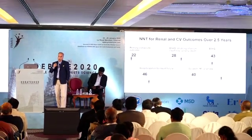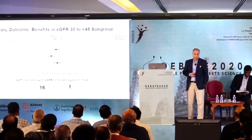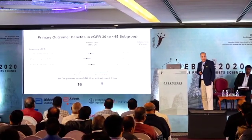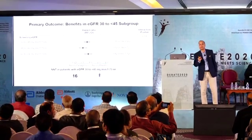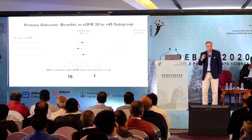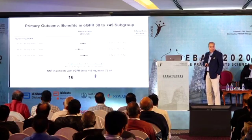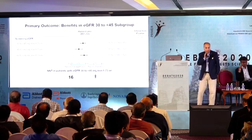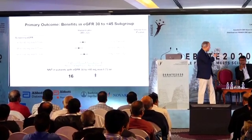The maximum benefit in the forest plot subgroup analysis was seen in individuals with eGFR between 45 and 60 — a high-risk group where aggressive treatment is most needed to prevent progression to lower GFR. In patients with eGFR between 30 and 45, who are at risk of fast progression to dialysis, the number needed to treat is only 16. These are remarkable results for this drug.